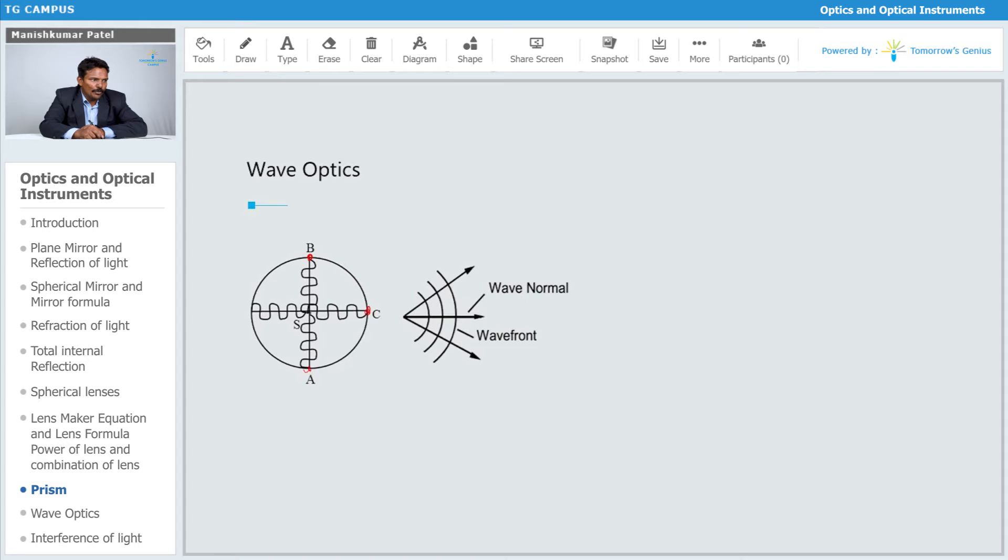According to Huygens' wave theory, every point on that wavefront will act as a secondary source of light. It will emit the light in further direction, so you will get the next wavefront. Again you can draw the next, likewise you can draw infinite number of wavefronts.